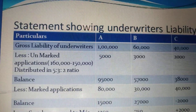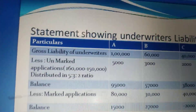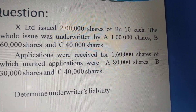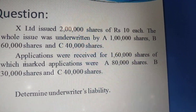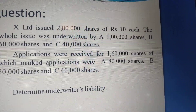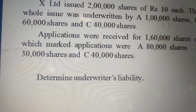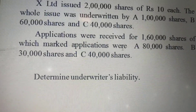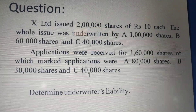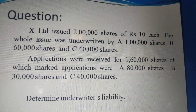Next, we write Less Unmarked Applications. Unmarked applications are those received directly by the company without any agent's stamp. Total applications received are 1,60,000 shares. Marked applications total 80,000 plus 30,000 plus 40,000, which equals 1,50,000. So unmarked applications are 1,60,000 minus 1,50,000, which equals 10,000 shares.